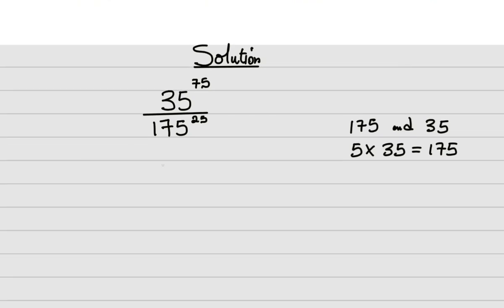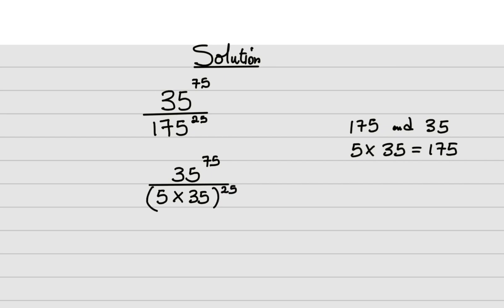So I will now write this as 35 raised to power 75, all over, and instead of 175 I will have 5 times 35, all raised to power 25. Now it is looking like something where I can actually apply one of the laws of indices.